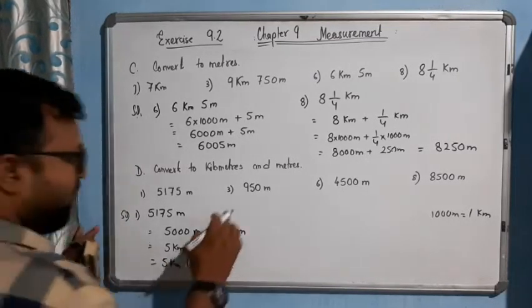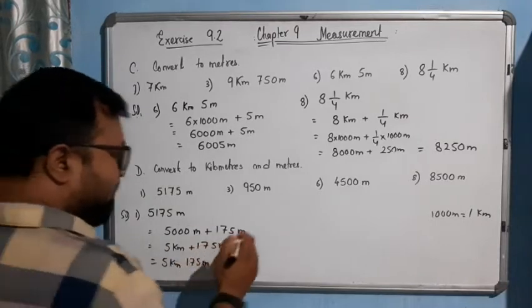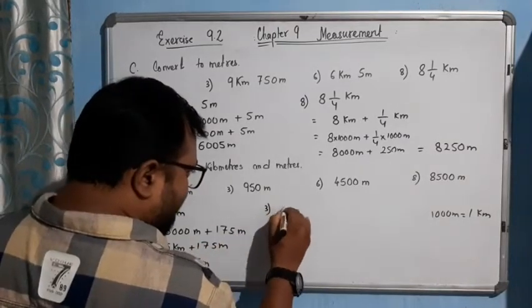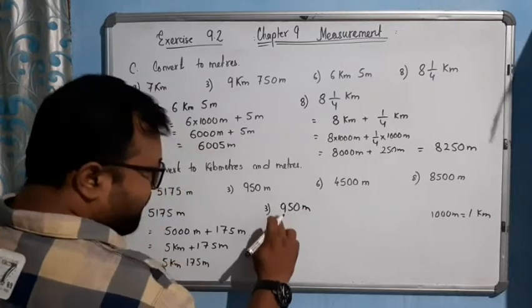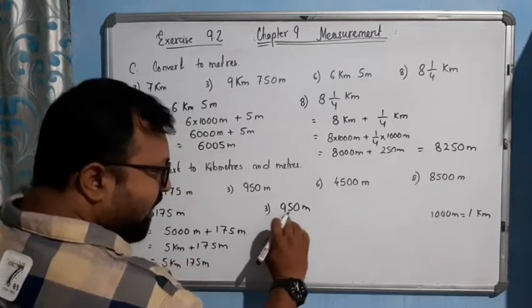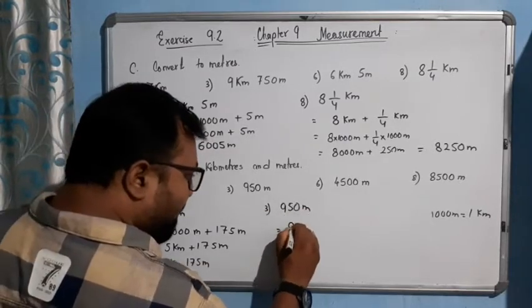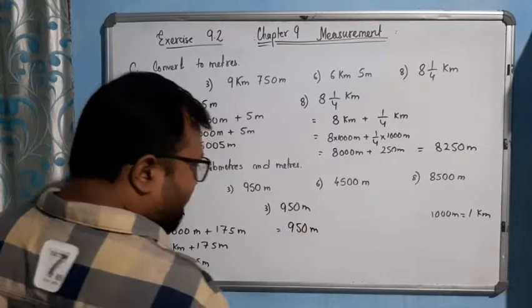For 950 meters: since there are no thousands digits here, it cannot make a full kilometer. So the answer is simply 950 meters — that is, 0 kilometers and 950 meters.